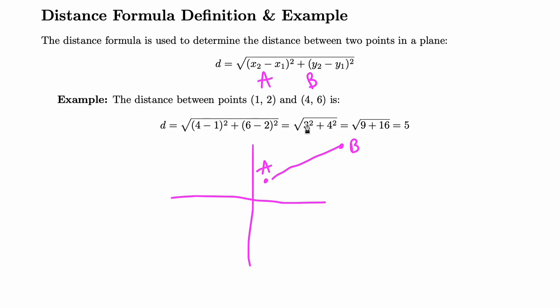So 4 minus 1 is 3. 6 minus 2 is 4. I'm going to use my order of operations. So I'm going to square that next or each of them next. So then I'm going to get 9 plus 16, which is 25. And the square root of 25 is 5. So this distance here is 5.